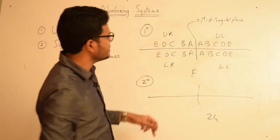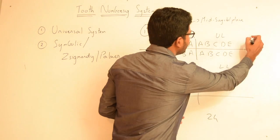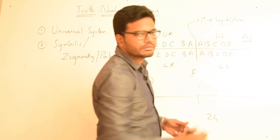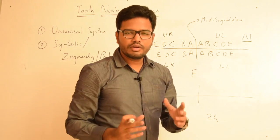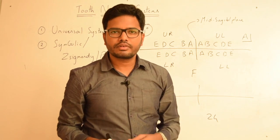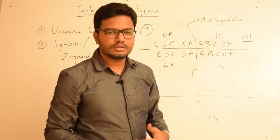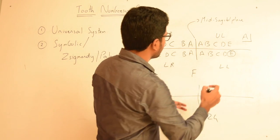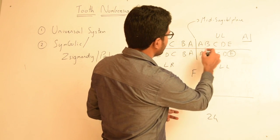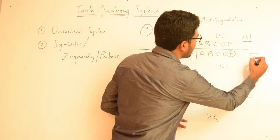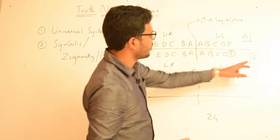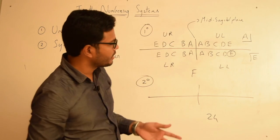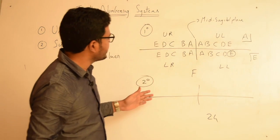In order to represent an upper right central incisor, we denote it as 'A' with a reverse-L symbol. If I wish to represent a lower left deciduous second molar, it is represented as 'E' with the symbol in the appropriate direction. That's the reason why it's called the Symbolic System.